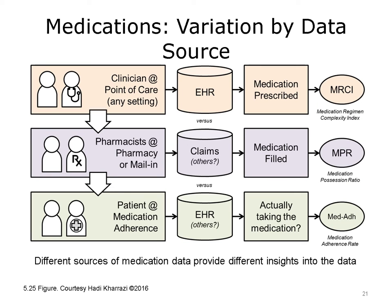This diagram shows that various medication data sources provide different derived variables. At the point of care, when a physician prescribes a medication, the prescription information is stored in an EHR system. The medication prescription information can then be used to calculate the MRCI for individual patients or a subgroup of the population. When the patient fills the prescription at the pharmacy, an insurance claim is generated, and filled medication information can be used to measure the MPR. When a clinician reconciles the medication records with a patient, the medication reconciliation record is stored in an EHR and can be used to measure the patient's actual adherence to the medication regimen.